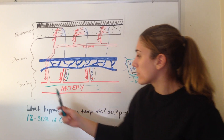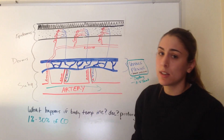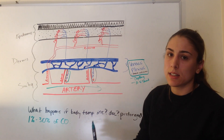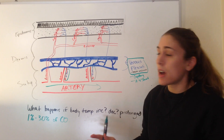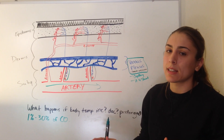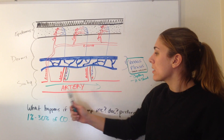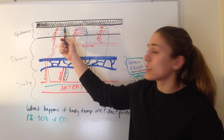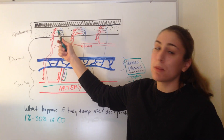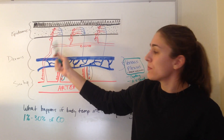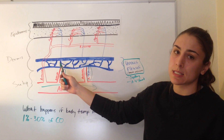So we have blood flow. We know that blood comes from an artery and breaks off into the arterioles. Now the skin is a huge organ, however it's not very metabolically active. Therefore, as the blood comes from the artery, very little blood is actually going to go to the capillaries, so you're not going to get very much nutritive flow.